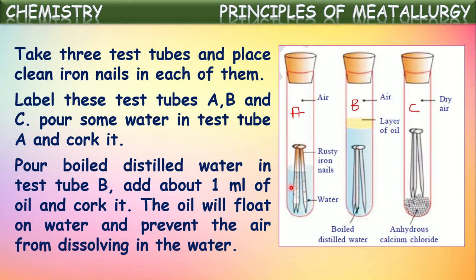So in test tube A, iron nails are in contact with both water and air. In test tube B, we poured boiled distilled water which does not contain any gases, and added 1 ml of oil. This oil floats on the water as a blanket and won't allow dissolution of any gases. So the iron nails in test tube B are in contact with water but not in contact with air.